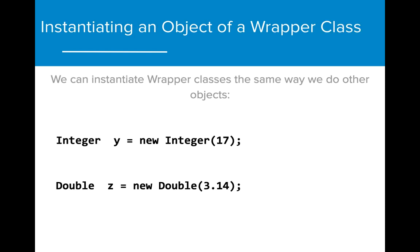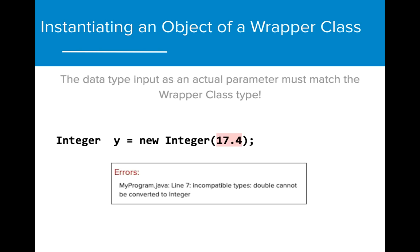We can instantiate wrapper classes the same way that we do with other objects. Creating an Integer object requires us to use the new operator followed by an int value. Just as with other object types, we can only input acceptable data types. For wrapper classes, the data type must match the primitive data types.